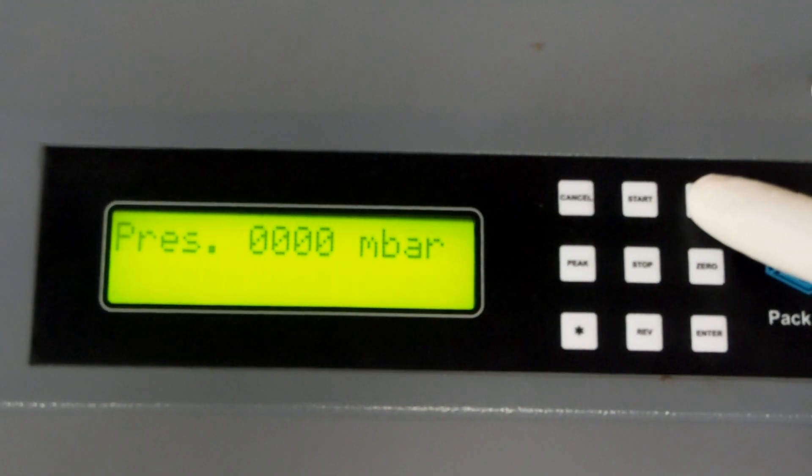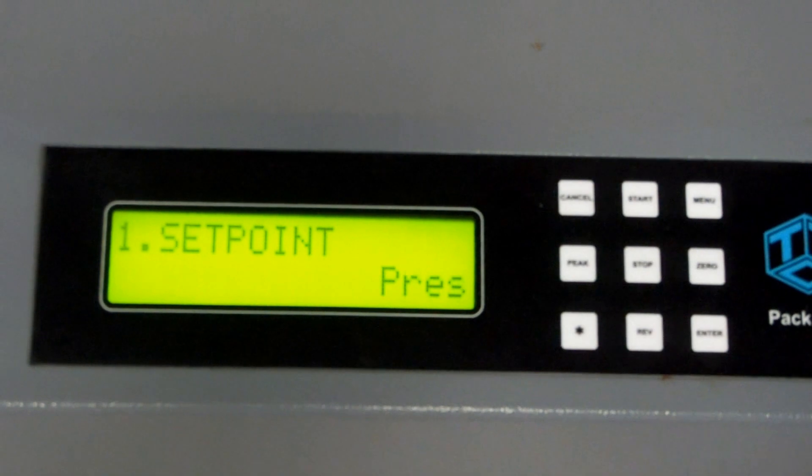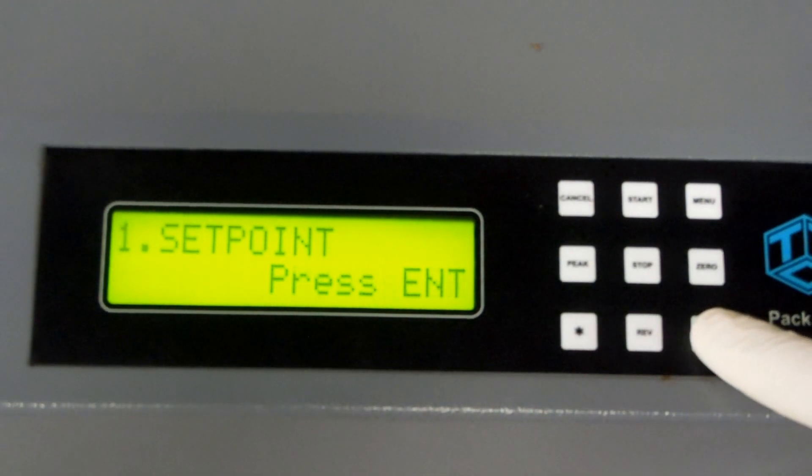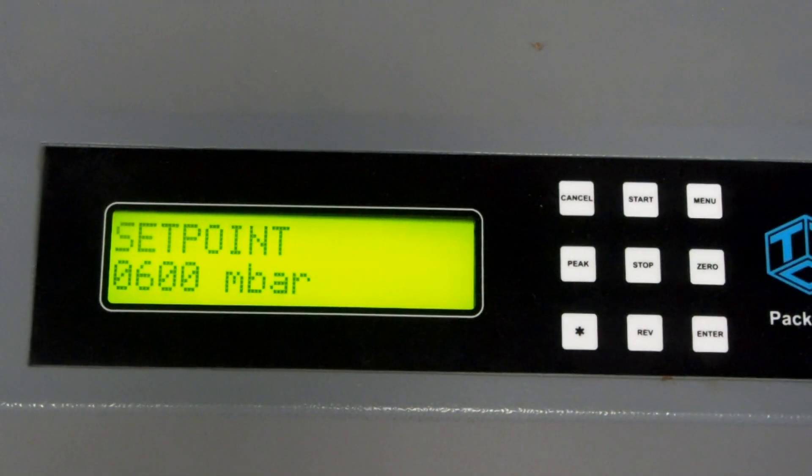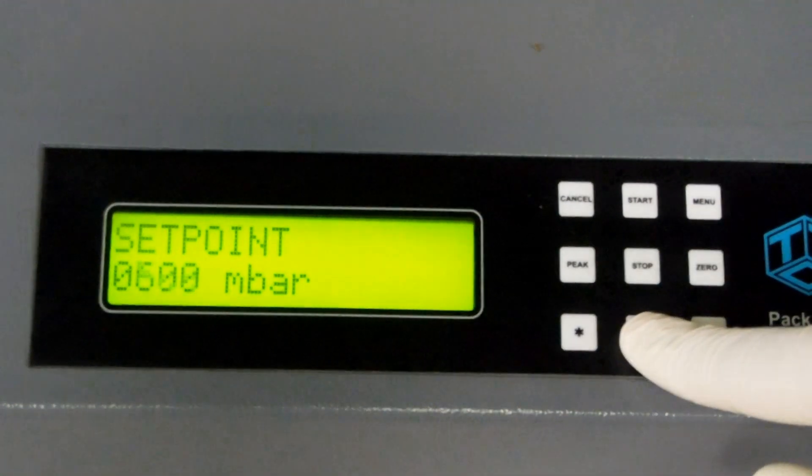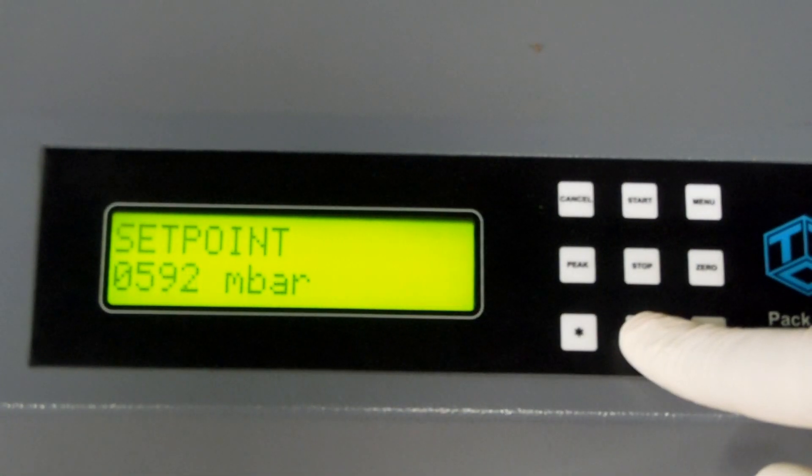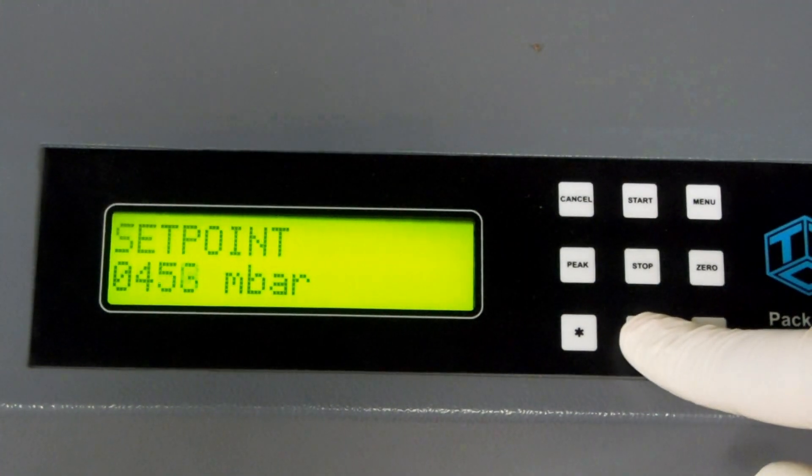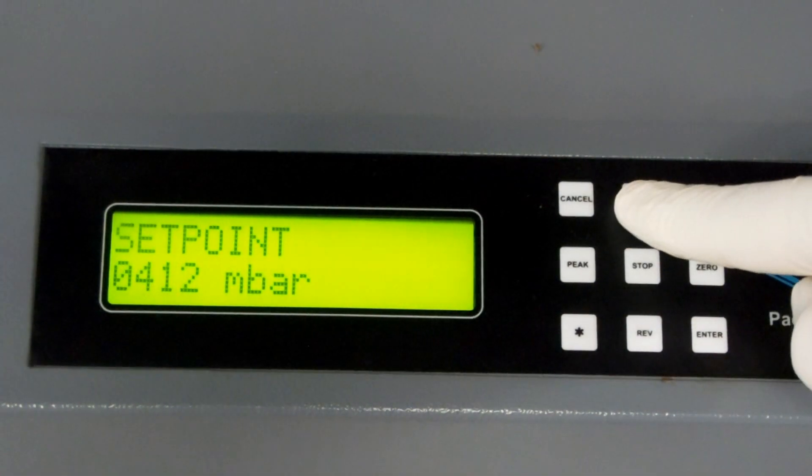Press menu, now press enter. This is the current vacuum setpoint. You can change the current setting by using the start and reverse keys to increase and decrease the value.